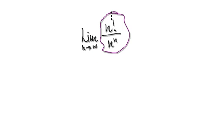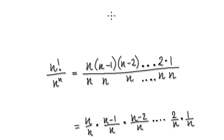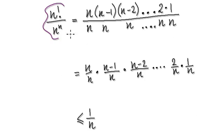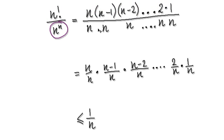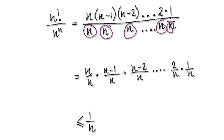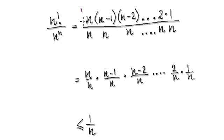So to do this, let's just look at this bit. So n factorial is really n times n minus 1 times n minus 2, and so on, times 2 times 1. And n to the power of n would be n times n times n times n and so on. So let's just break this up into separate fractions.